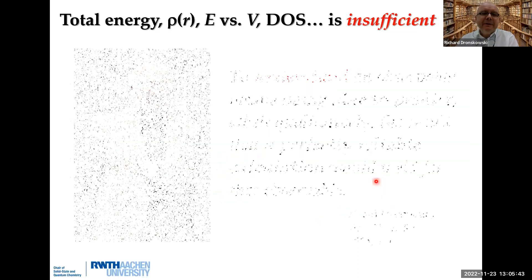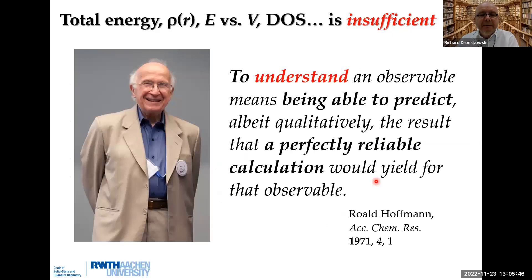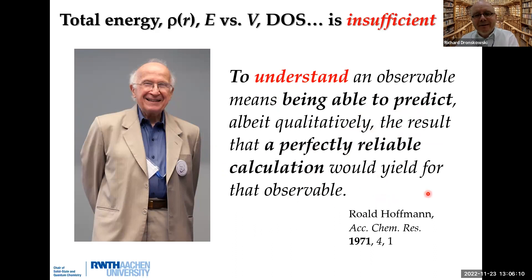So let me show you this other quote I was already telling you about. This is by my old boss, Roald Hoffmann, who got a Nobel Prize in 1981. Ten years before he got the Nobel Prize, he said something like this: to understand an observable means being able to predict, albeit qualitatively, the result that a perfectly reliable calculation would yield for that observable. So we do not necessarily want to calculate and recalculate. If we're able to understand, then we know at least qualitatively the next result we're looking for.